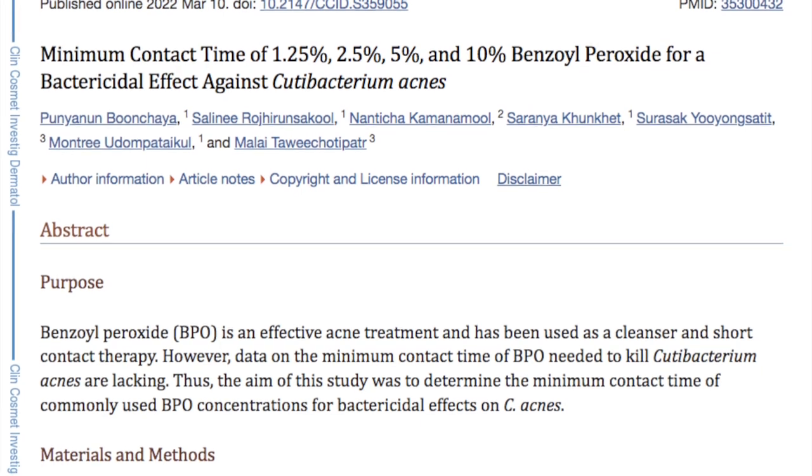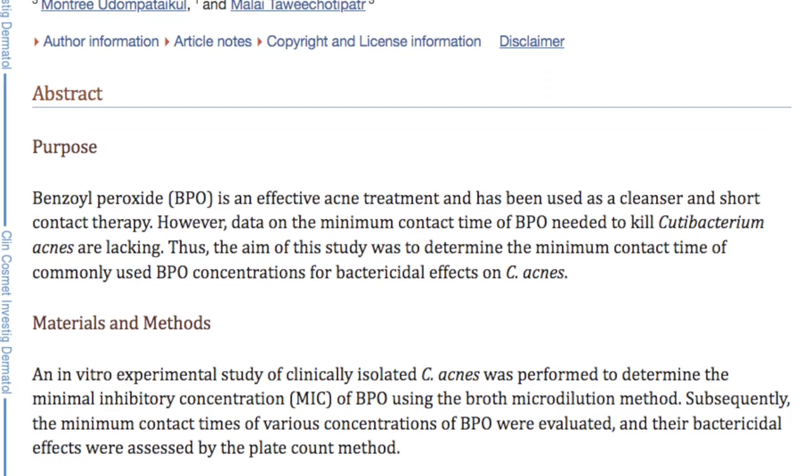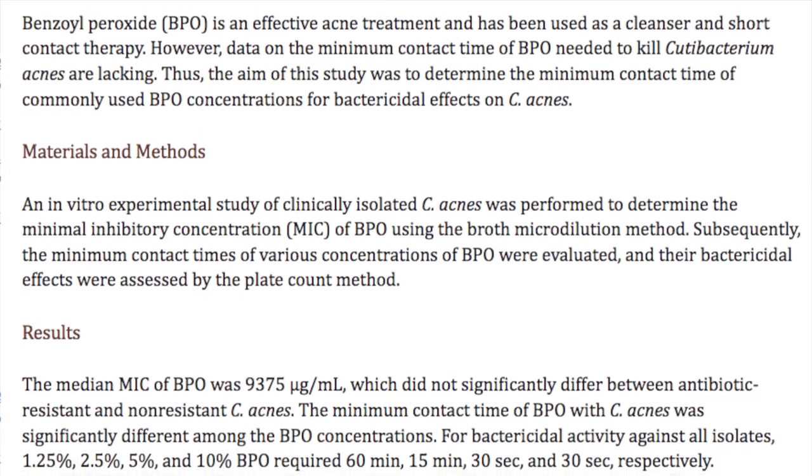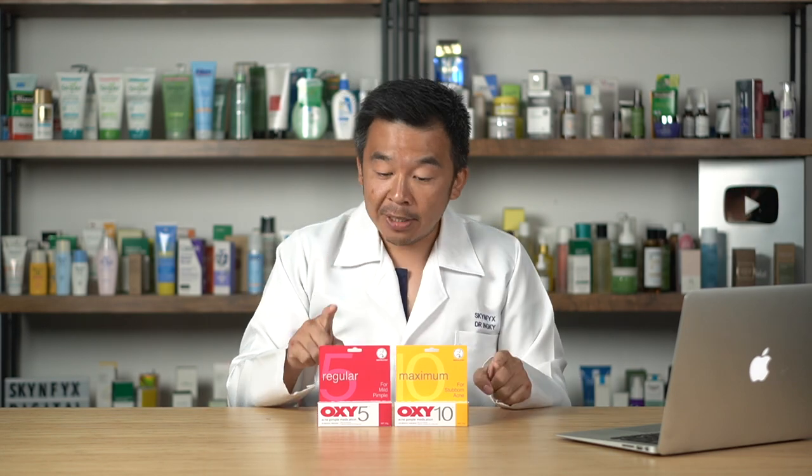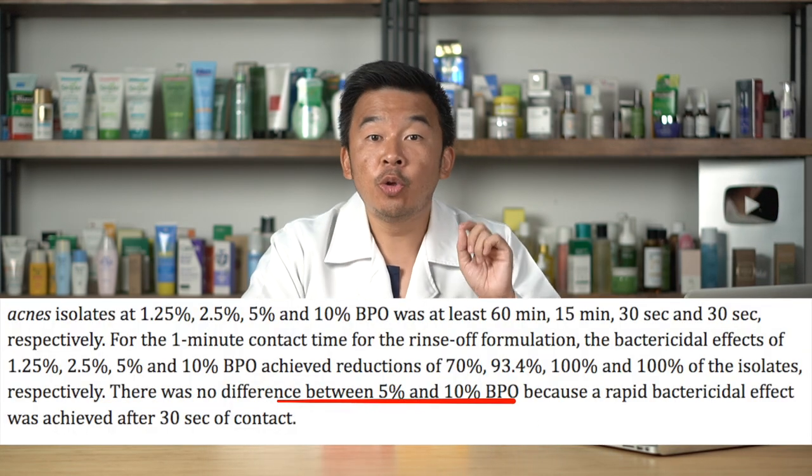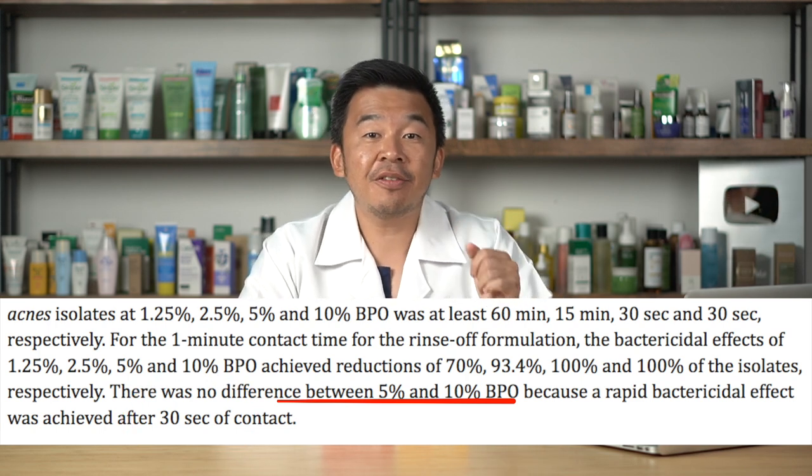Why only a short period of time? A clinical study — linked in the description — compares concentrations of 1.25%, 2.5%, 5%, and 10% benzoyl peroxide. It found that at low dose 1.25%, it requires 60 minutes of application to kill the acne-causing bacteria. But at 5% or 10%, it takes no longer than 30 seconds to kill off the bacteria on your skin. So you don't need to leave it on longer than one minute for acne treatment.